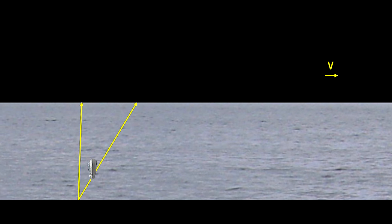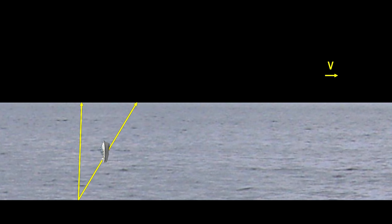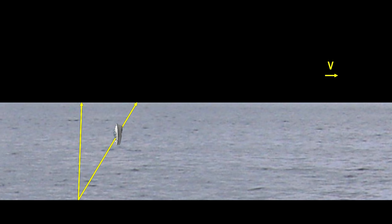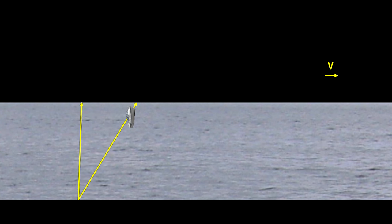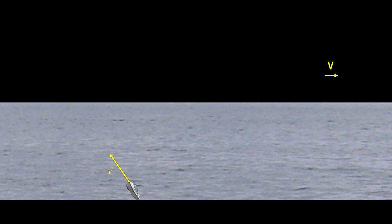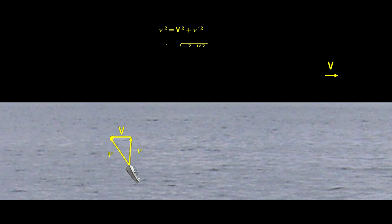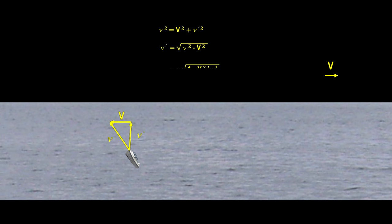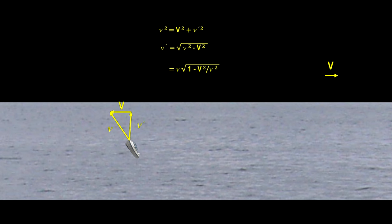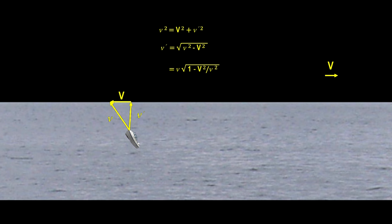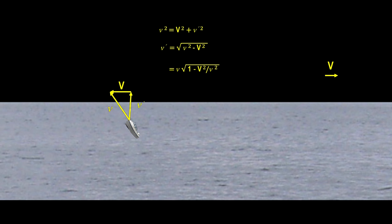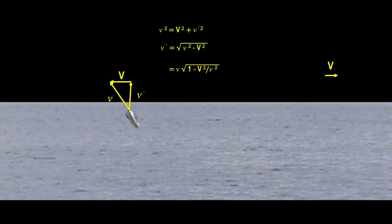Let's take a look at the boat going across the river. If the boat headed directly to the destination point, the current would take it downstream and it would miss its target. To compensate, the upstream component of its velocity would have to match the flow velocity of the river. This would give us a right triangle, where V' would be the net speed across the river. We can calculate V' by using the Pythagorean Theorem.